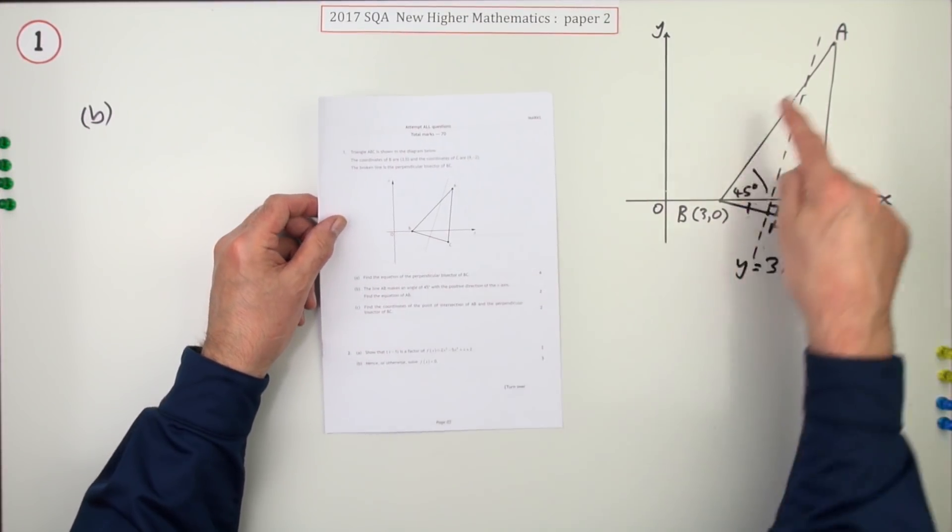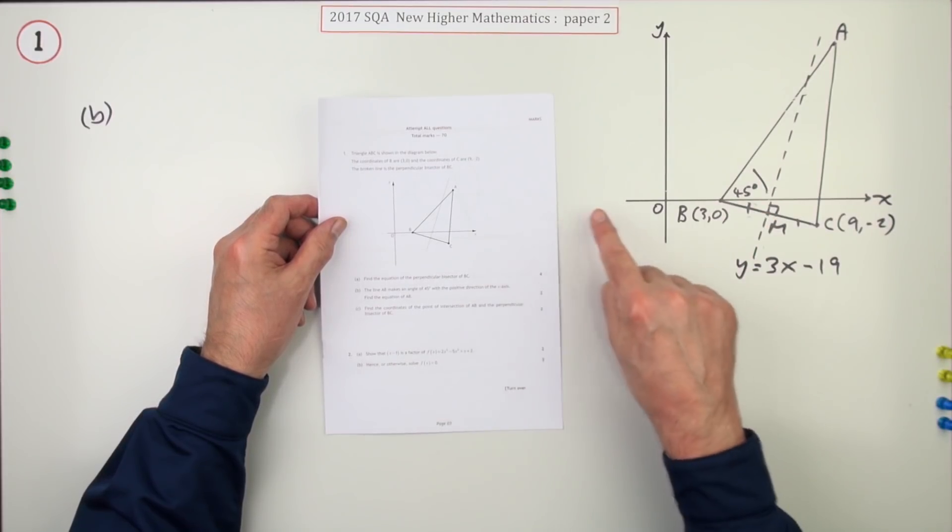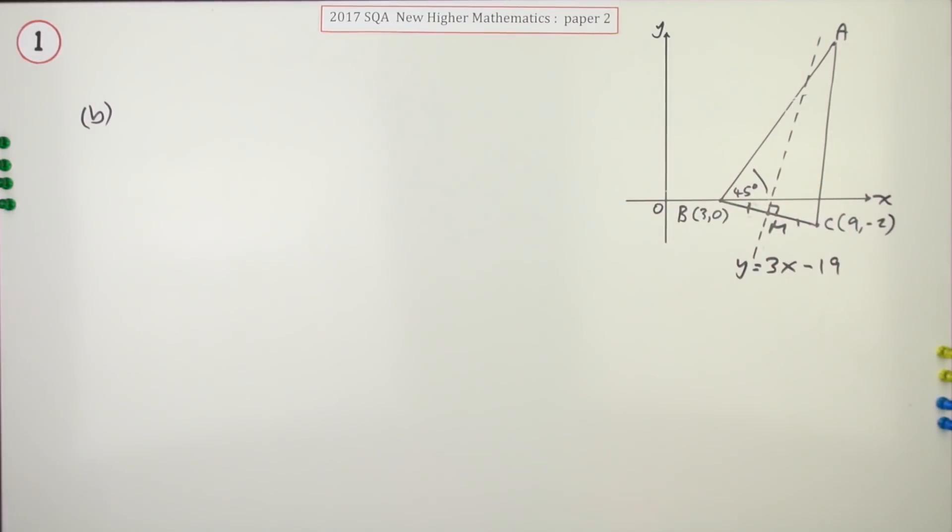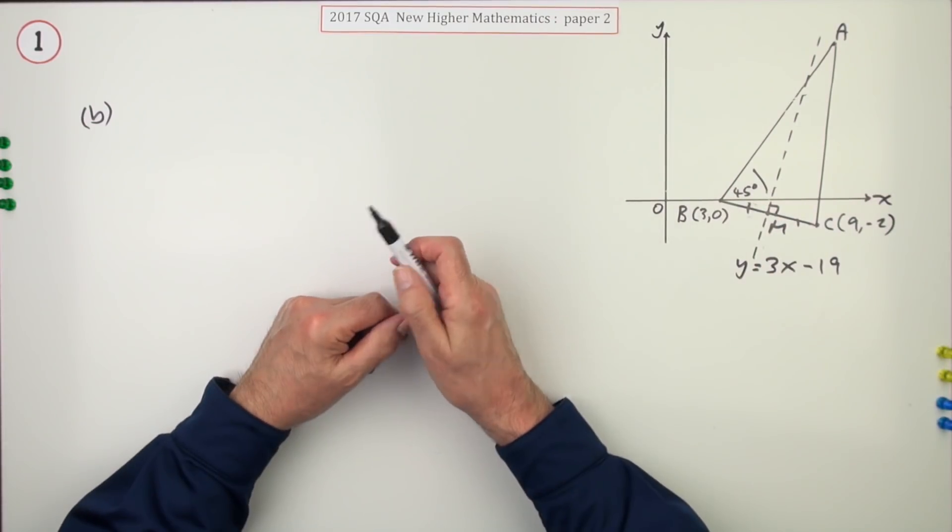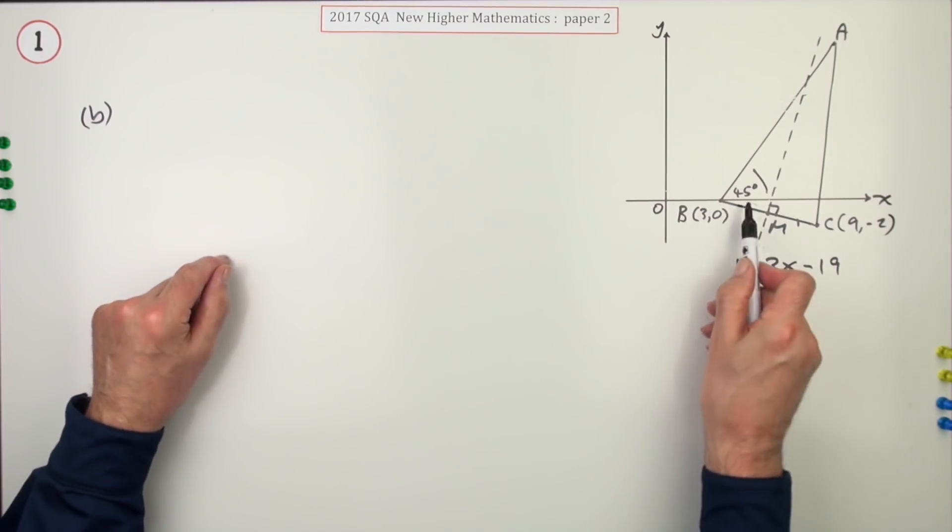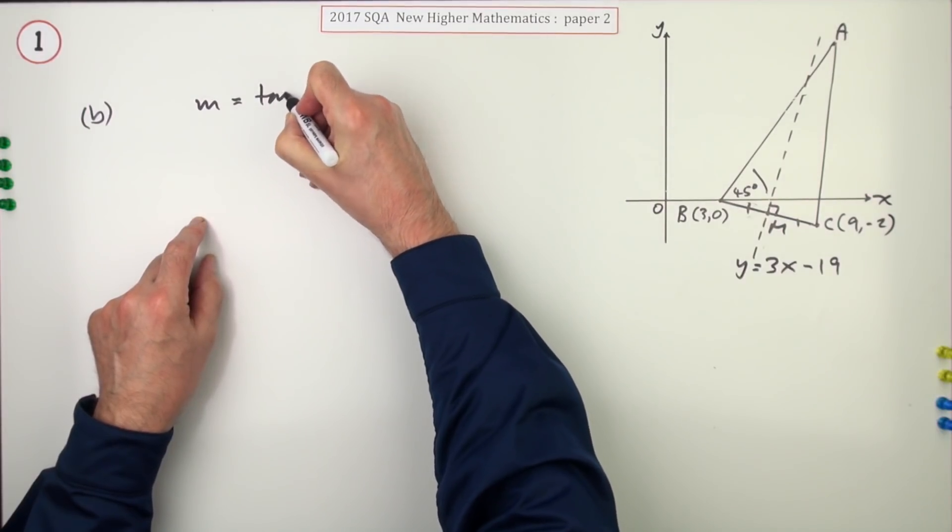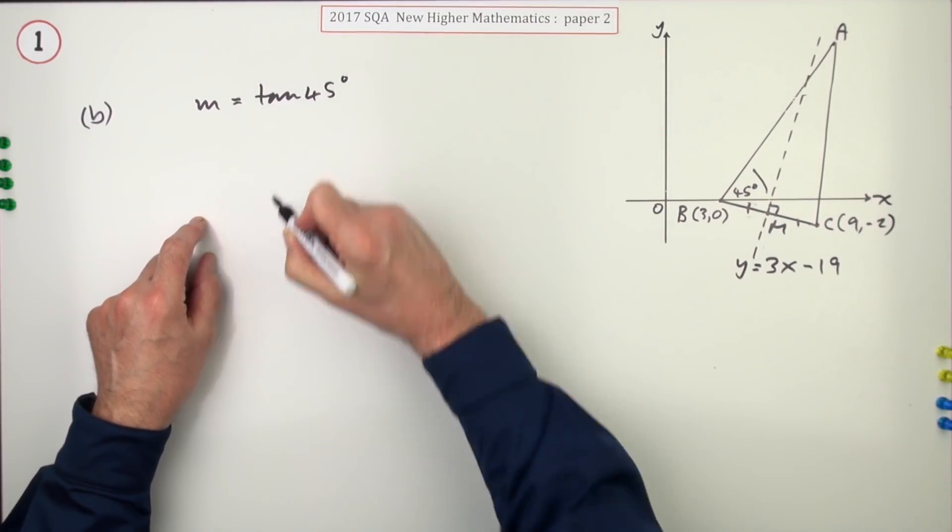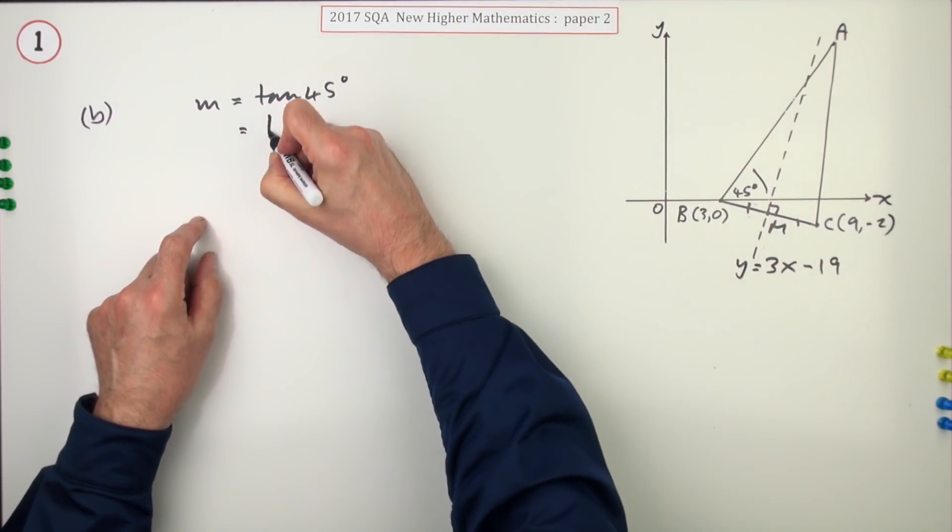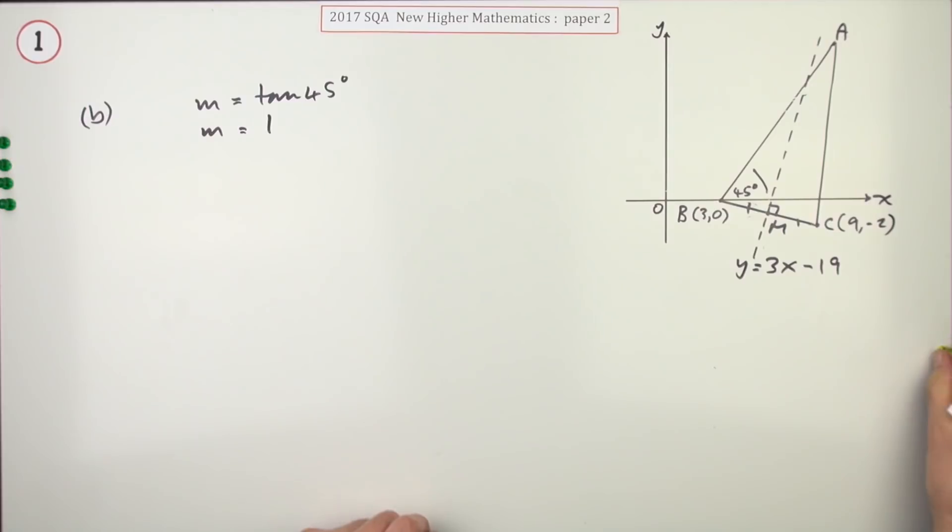And so to part b, the line AB makes an angle of 45 degrees to the positive direction of the x-axis. What's the equation of AB? Well, it's a line, so you need a point on it. I've got that, the point B, and then its gradient, and there's immediately the connection. Gradient and angle. The gradient is the tangent of the angle, so you'll just state that. The gradient will be the tangent of 45 degrees, and you know that the tangent of 45 degrees is 1. That's the first mark.